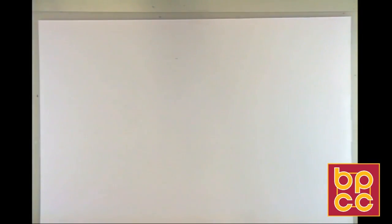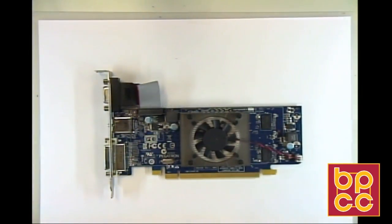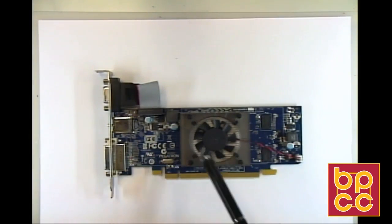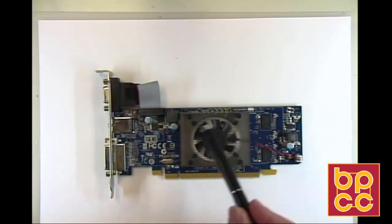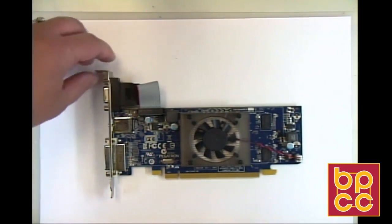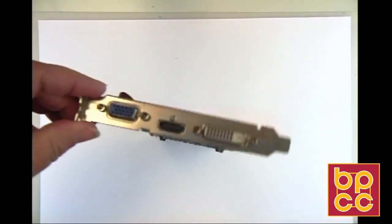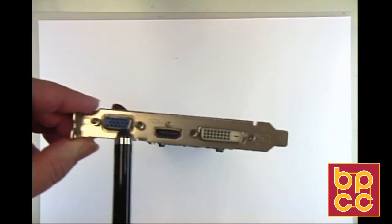The adapter cards that I mentioned earlier that fit into an expansion slot may include a video adapter such as this one. This one actually has a cooling fan on top of the processing unit for the video card, and I can tell that this is a video card because of the adapter ports that are on the outside edge.